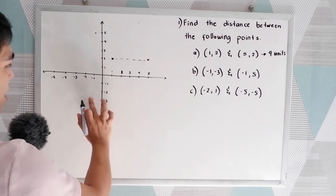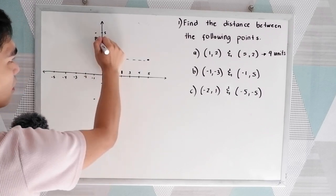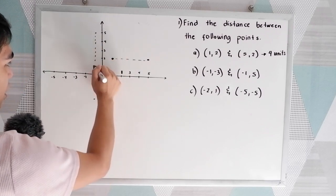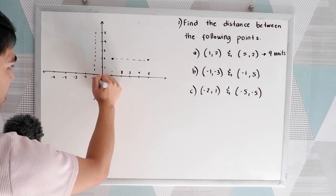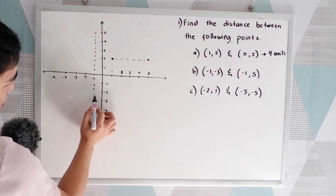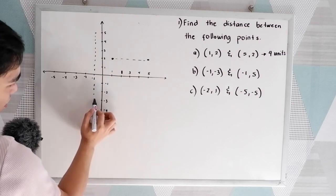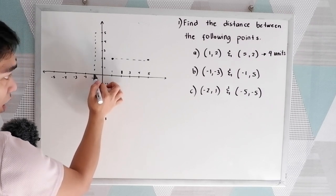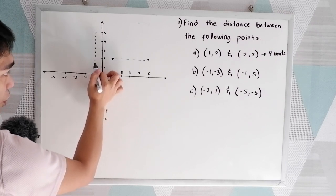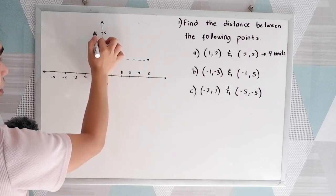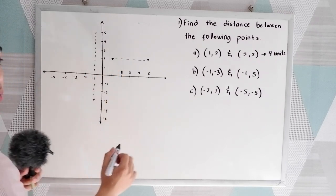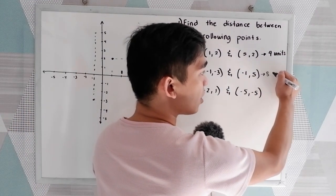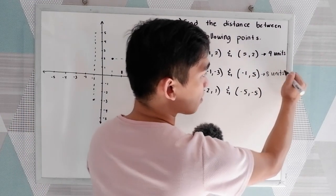Connecting the two points, how many units between them? Starting from our first point: 1, 2, 3, 4, 5, 6, 7, 8. So there are 8 units between the two points.